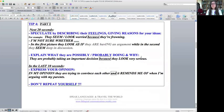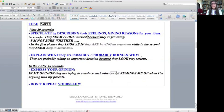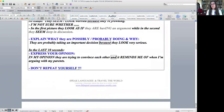So tip four is to use the next 20 seconds to speculate by describing their feelings and giving reasons for your ideas. So they seem worried or they look worried because they're frowning. I'm not sure whether. In the first picture they look as if they're having an argument, while in the second they seem deep in discussion. So speculate means you don't really know. You're just imagining what they feel. So that's why you have to demonstrate that you're not sure.